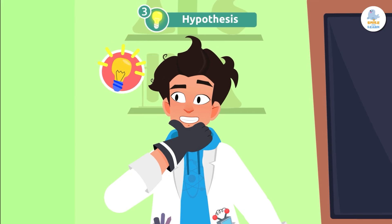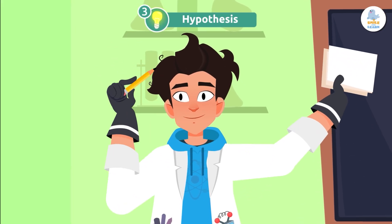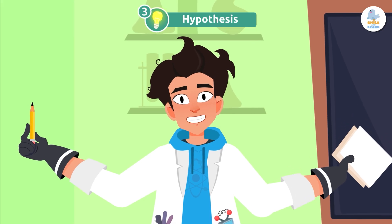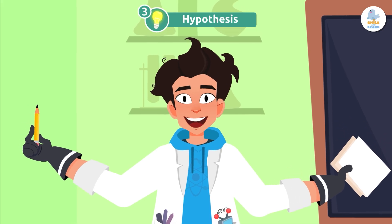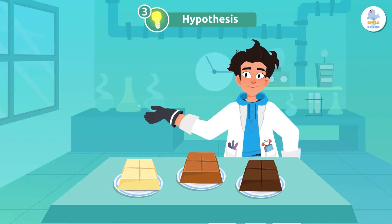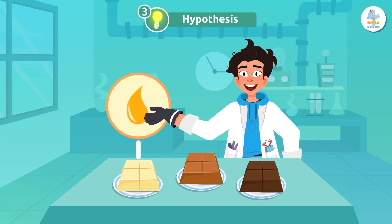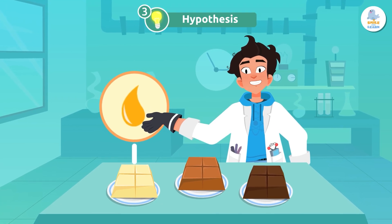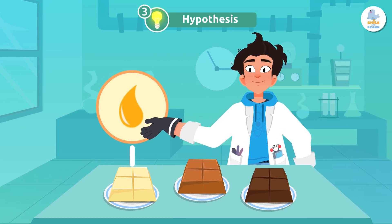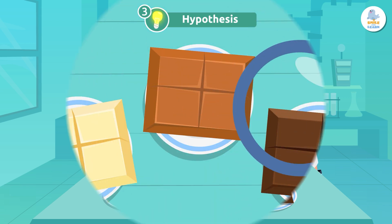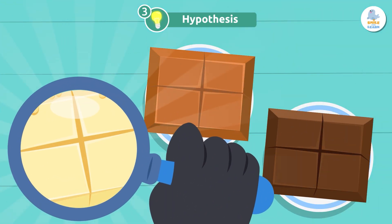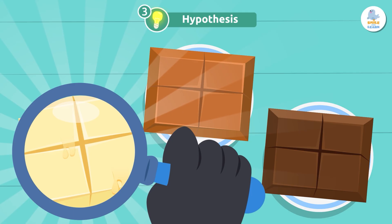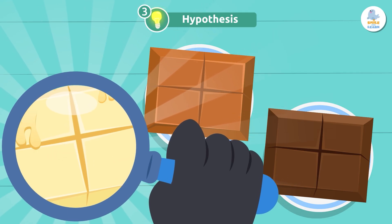Hypothesis. Now it's time to make a hypothesis. A hypothesis is an educated guess about what we think will happen, based on the information we have. For example, if our research shows that white chocolate has the most fat and fat melts easily, we can say that white chocolate melts faster because it has more fat. This is our hypothesis.